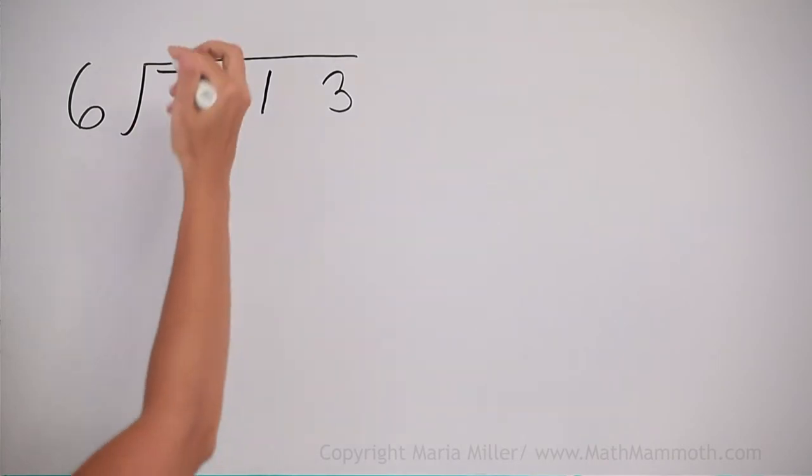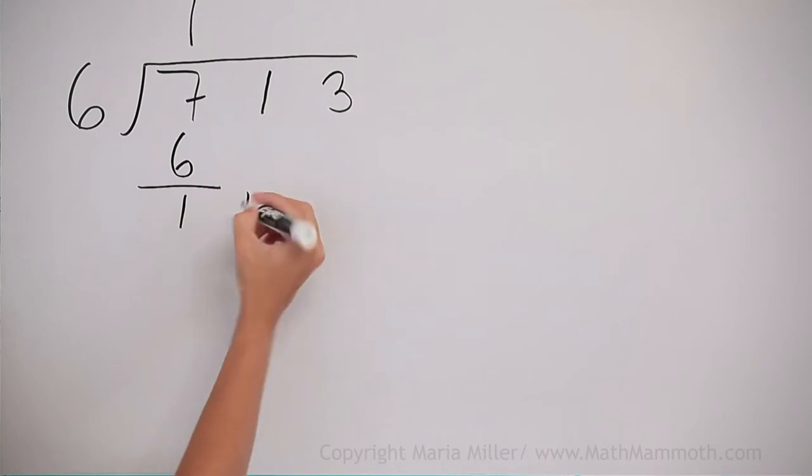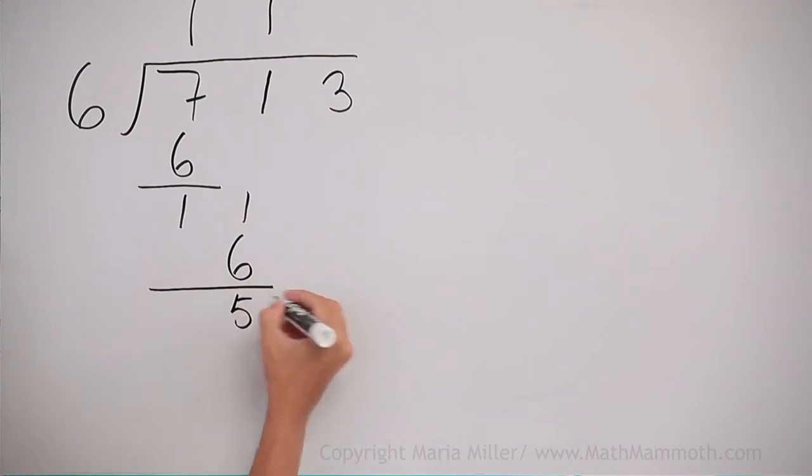6 goes into 7 one time, and 1 times 6 is 6, subtract, and we get 11. 6 goes to 11 one time, 1 times 6, and then subtract, and then 53.